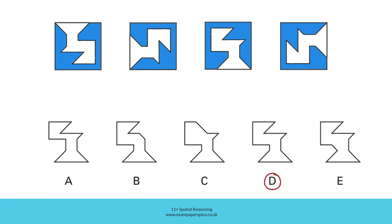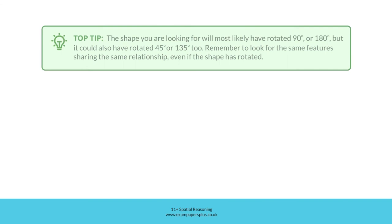D represents the shape we would need to add to the original shape in order to create that target shape. The shape you are looking for will most likely have rotated 90 degrees or 180 degrees, but it could also have rotated 45 degrees or 135 degrees too. Remember to look for the same features showing the same relationship, even if the shape has rotated.